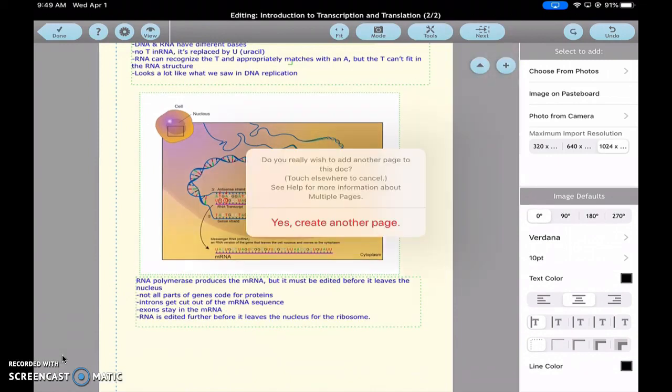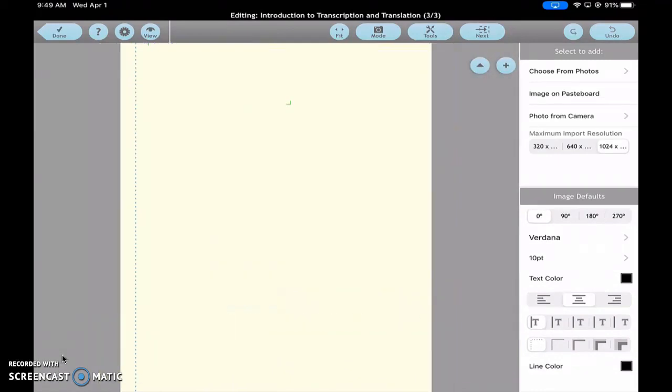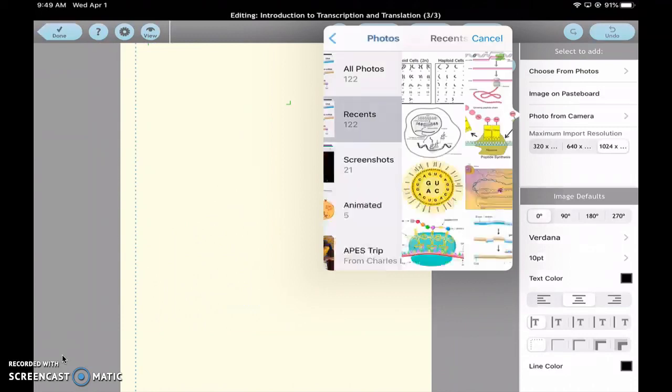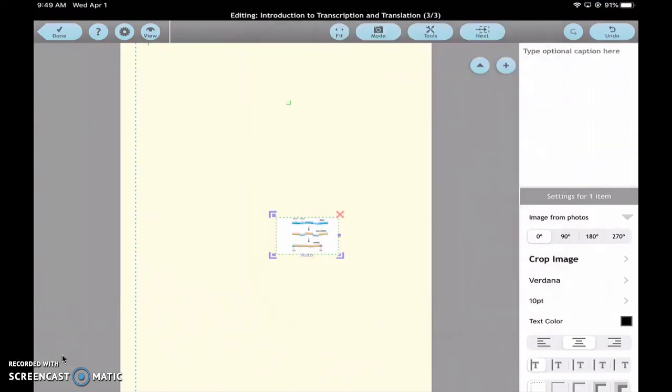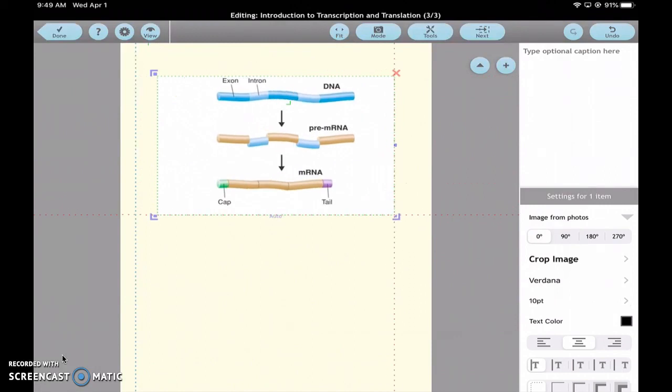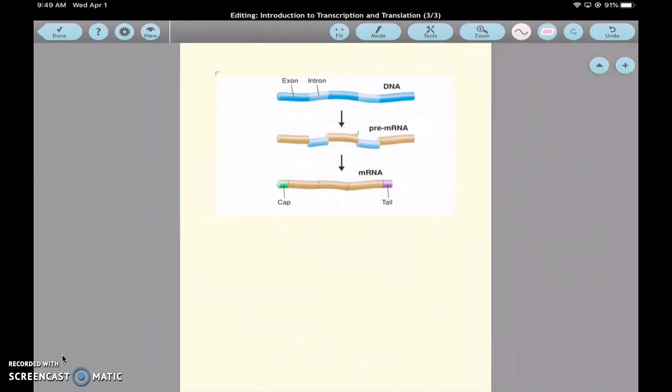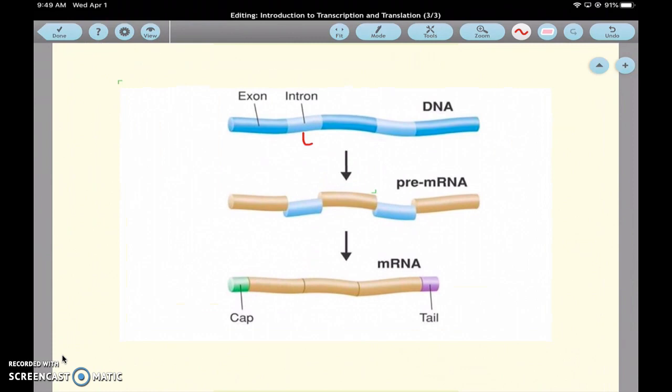All right, I'm going to move it to another page. Let's see if you can see it. So you can see the introns, which are the light blue parts here and here. The way I remember: introns, it's like opposite. Introns go out or exit, and exons stay in.